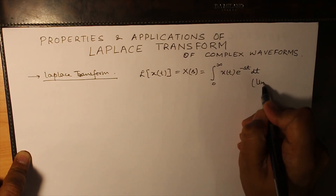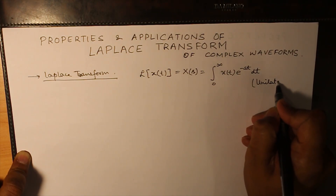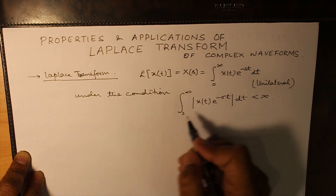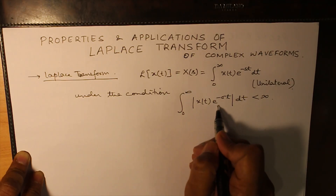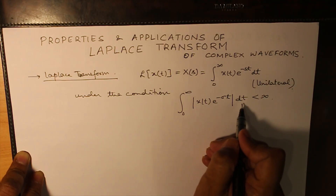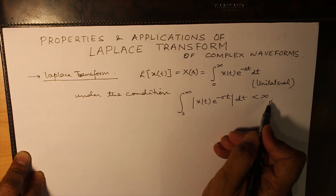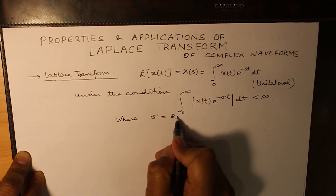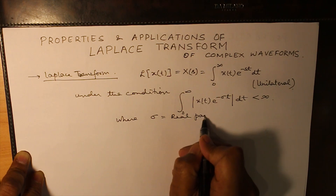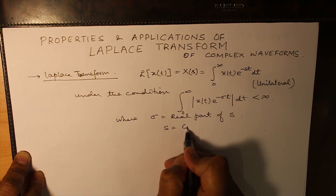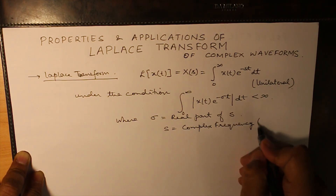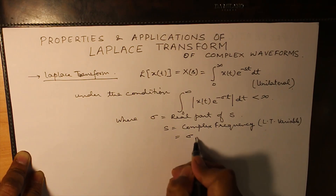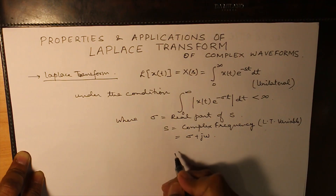This is a unilateral Laplace transform, which is what we will be doing, under the condition that the integral from 0 to infinity of the modulus of x(t) e raised to the power minus sigma t dt is less than infinity, where sigma is the real part of s. S is the complex frequency — you may have seen it as the Laplace transform variable in mathematics. It has two parts: sigma plus j omega.